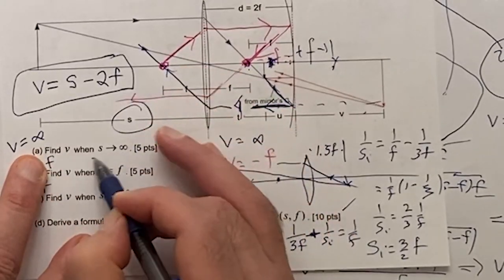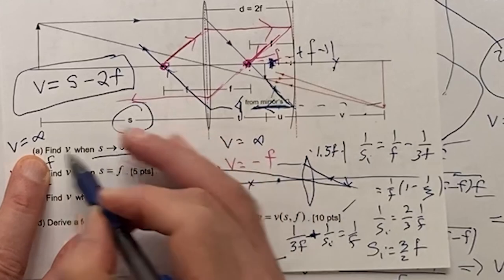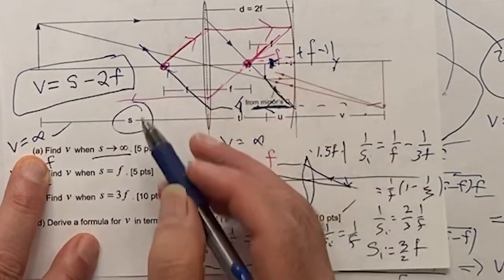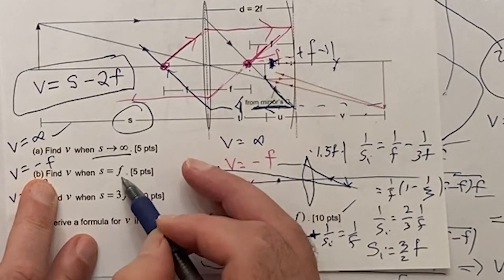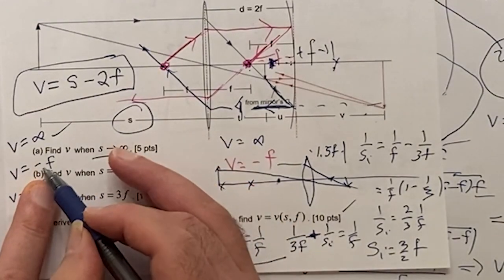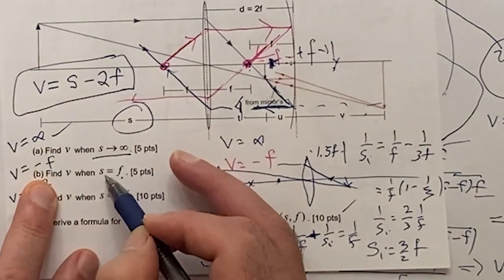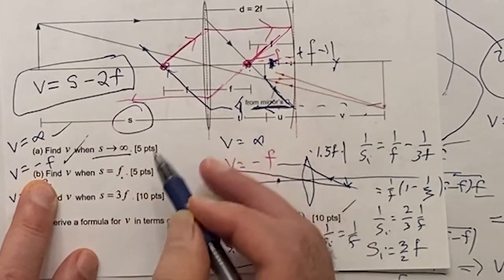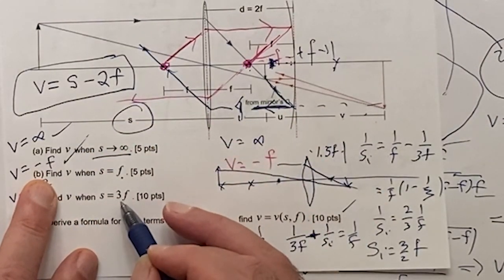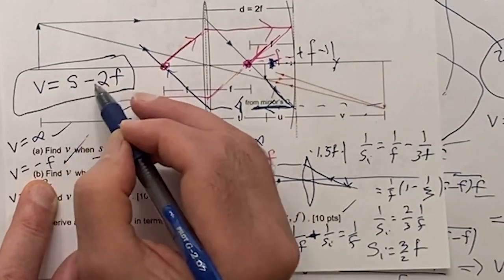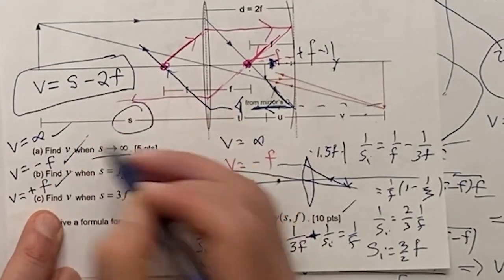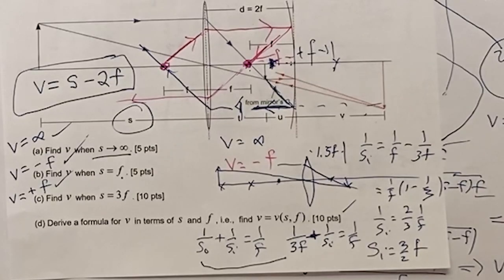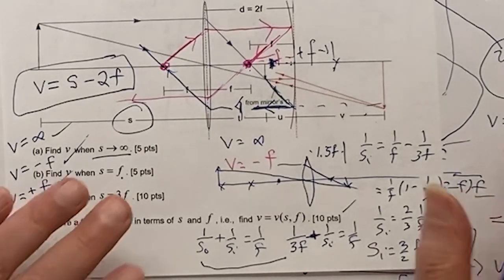Master formula: V = S − 2F. Verification: if S → ∞, V → ∞ ✓; if S = F, V = F − 2F = −F ✓; if S = 3F, V = 3F − 2F = F ✓. All three cases check out. Beautiful — the master formula is confirmed.